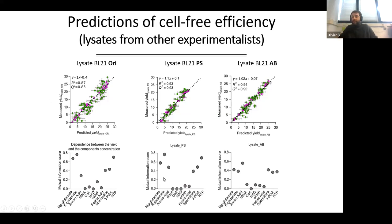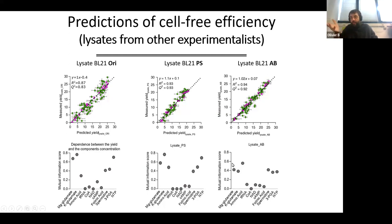We also confirmed that the compounds not affecting protein production were always the same across lysates: tRNA, coenzyme A, NAD, cyclic AMP, and folinic acid did not strongly affect production in any lysate. However, some elements were more important in certain lysates than others — for example, NTPs appeared less important in the last lysate compared to the other two.